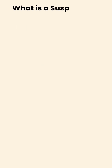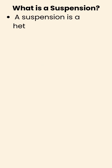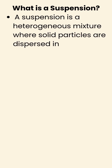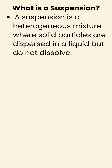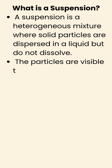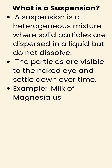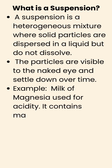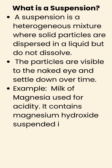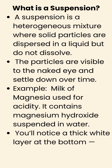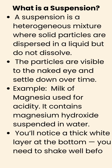What is a suspension? A suspension is a heterogeneous mixture where solid particles are dispersed in a liquid but do not dissolve. The particles are visible to the naked eye and settle down over time. For example, milk of magnesia — used for acidity — contains magnesium hydroxide suspended in water. You'll notice a thick white layer at the bottom; you need to shake well before use.